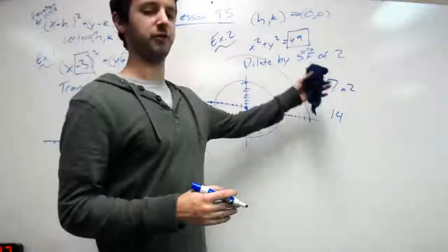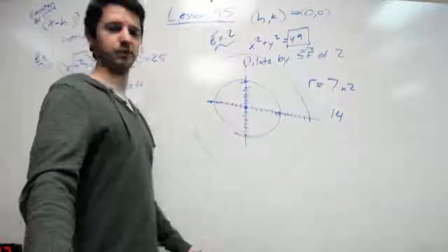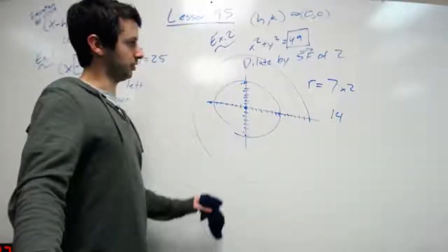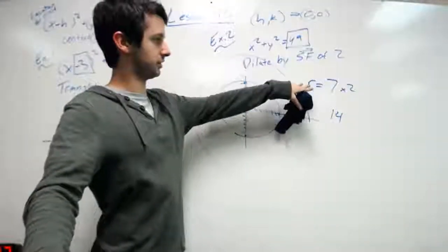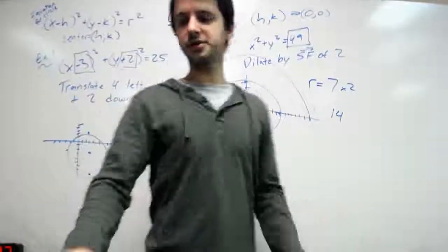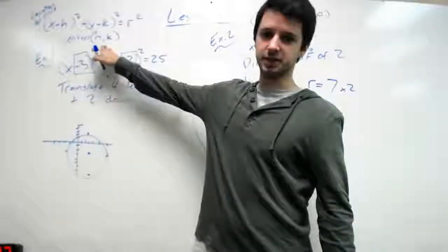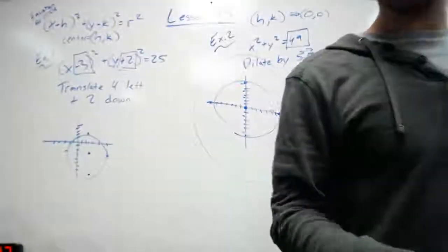If you wanted the scale factor of one-third, you would divide it by three. So dilation, for the scale factor, you're going to look at the radius. Translation, you're going to look at the center. And that's how you translate and dilate circles.